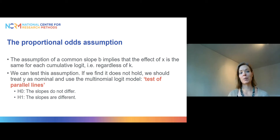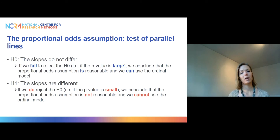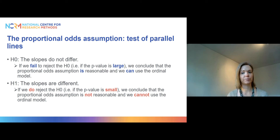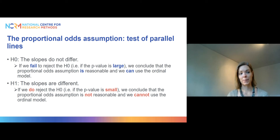When we conduct the test of parallel lines, our null hypothesis states that the slopes do not differ, and the alternative hypothesis states that the slopes are different. If you get a large p-value, it means that we fail to reject the null hypothesis and we conclude that the proportional odds assumption is reasonable and we can use the ordinal model. However, if you get a small p-value, it means that we do reject the null hypothesis and conclude that the proportional odds assumption is not reasonable. So while this is logical when thinking about the hypotheses, it is sort of the other way around from normal statistical testing — here you actually hope for a big p-value.